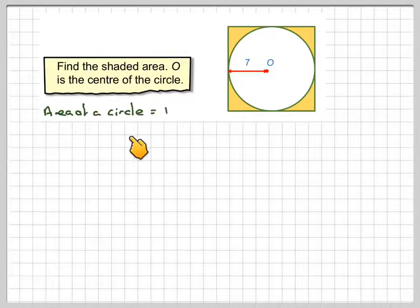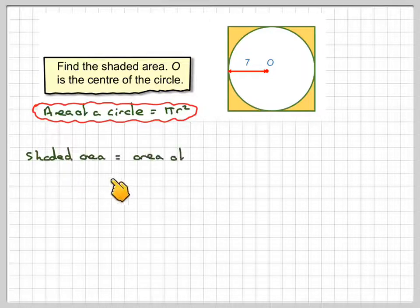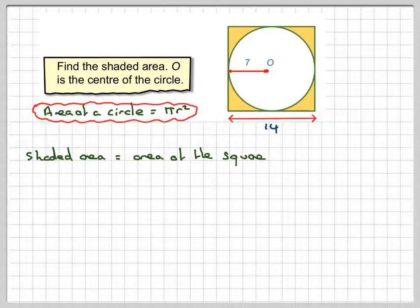The area of a circle we know to be pi r squared. So the shaded area, this orange shaded area, will be the area of the square minus the area of the circle.